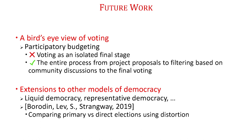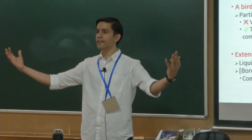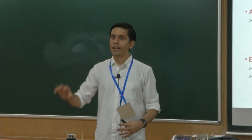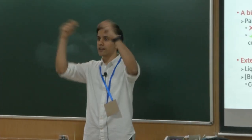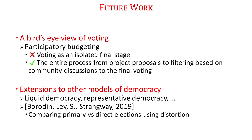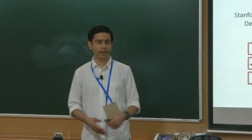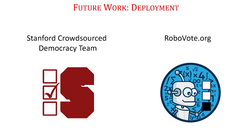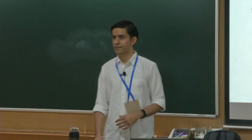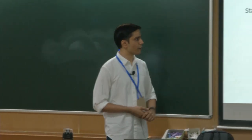Another direction is extending this to different models of democracy like liquid democracy and representative democracy. With some collaborators we have a AAAI 2019 paper comparing the primary-based election system — where each party holds an internal primary electing one candidate to the general election — against a single direct election, using the distortion framework. Finally, there is a need for voting theorists to engage with practitioners: Ashish Goel's team at Stanford has done fantastic work deploying participatory budgeting approaches in Cambridge, New York, and San Francisco, and with Ariel Procaccia we have RoboVote deploying distortion-based voting approaches for real-life decisions.